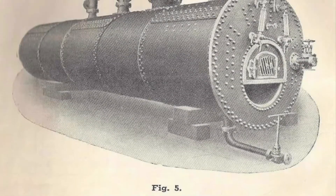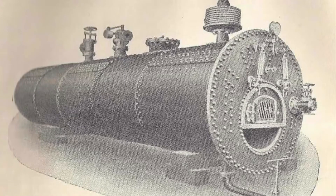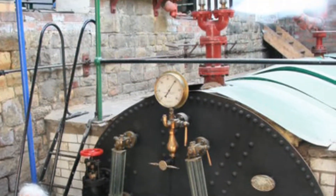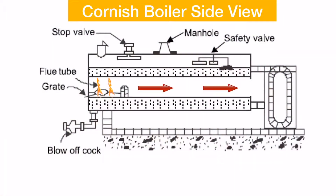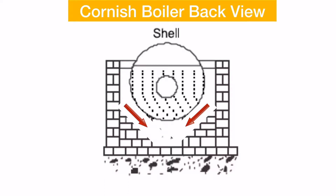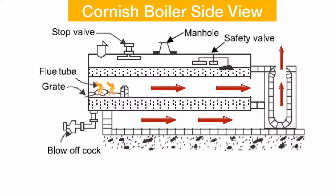Another fire tube boiler development is the Cornish boiler — a horizontal boiler with a natural draft system that requires a tall chimney to ensure adequate oxygen supply. It consists of a large water tank with a combustion chamber in the middle, flanked by a brick building. Combustion gases exiting the central chamber flow back along the outer edge of the tank, and the brick structure then directs the exhaust gas through a passageway under the tank before it exits through the chimney into the atmosphere.